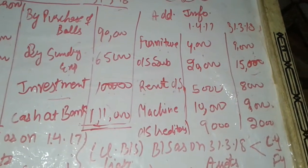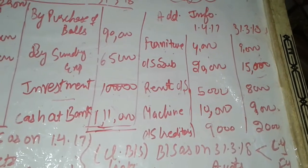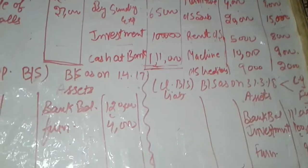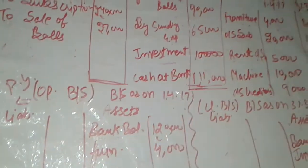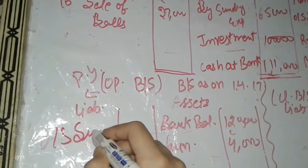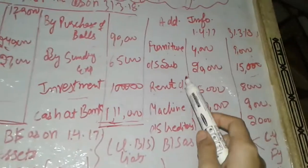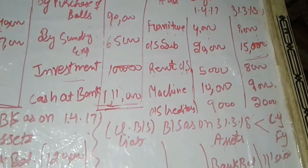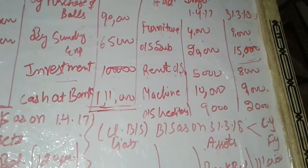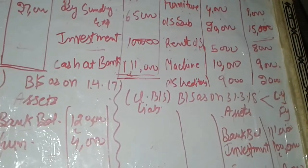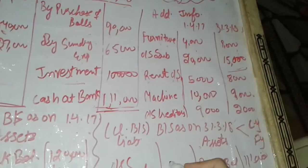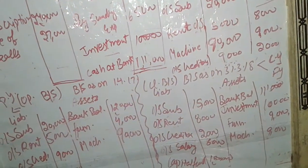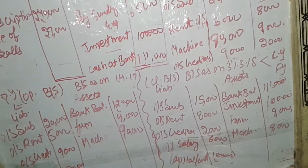Outstanding subscription as on 1st April 2017 means that in 2017, a subscription amount of Rs. 20,000 was still outstanding. It belongs to 2017 and is posted on the liability side of the opening balance sheet as outstanding subscription Rs. 20,000. Outstanding subscription as on 31st March 2018 means that a subscription amount of Rs. 15,000 is still outstanding in 2018, so it is written on the liability side of the closing balance sheet as outstanding subscription Rs. 15,000.